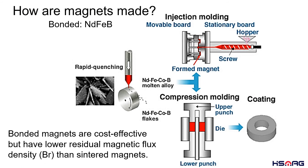Magnets that pass inspection proceed to a machining process to be shaped as required. Bonded magnets can be created from various magnet materials mixed with different plastic binders. These magnets can be formed through injection molding or compression bonding. Although bonded magnets are cost-effective, they have a lower residual magnetic flux density Br than sintered magnets because of the binder material added into them.